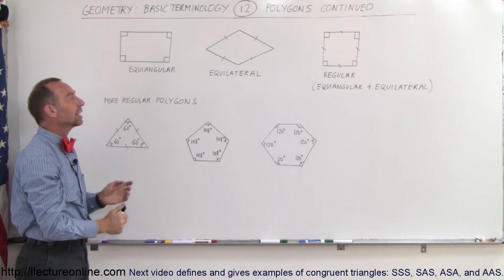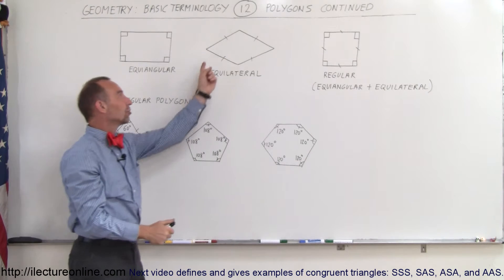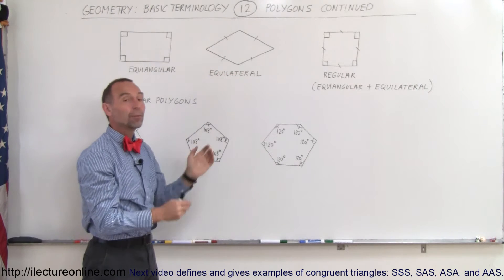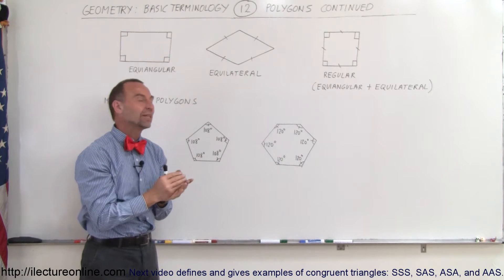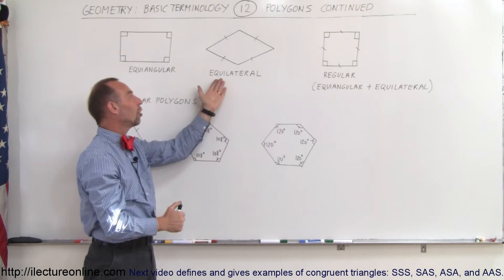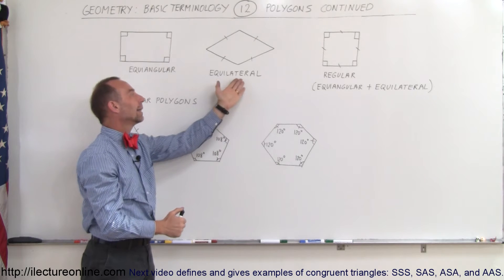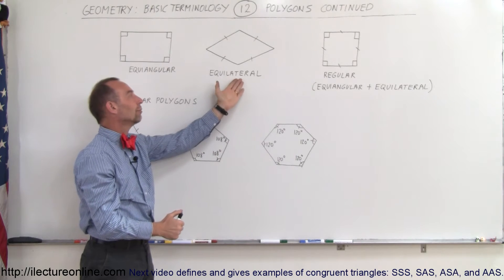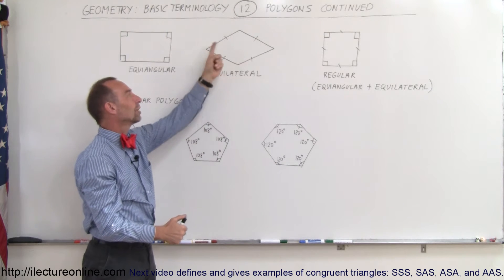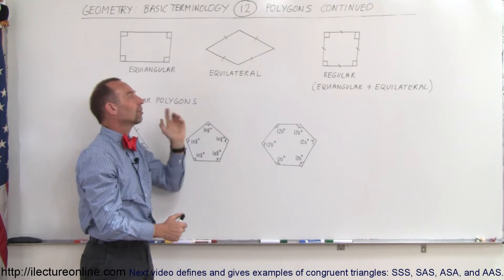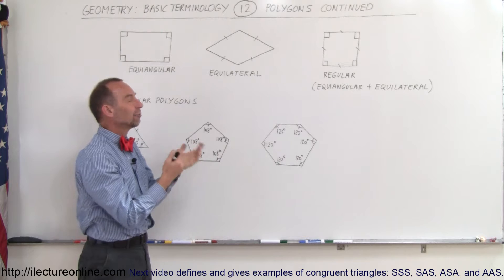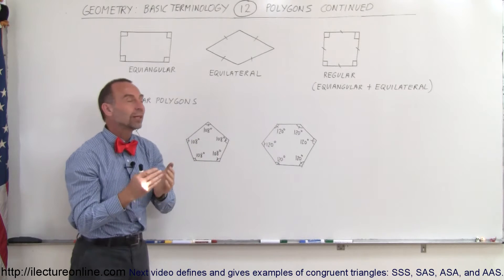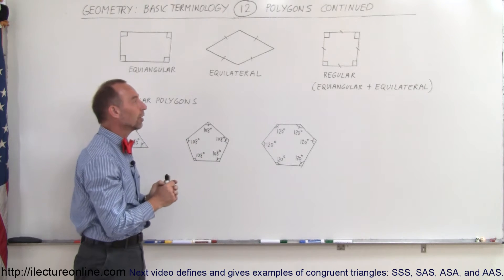We can have the case where all the angles are not the same but all the sides are the same — that's called equilateral. Lateral refers to sides, so here all four sides are the same and therefore we call them equilateral polygons.